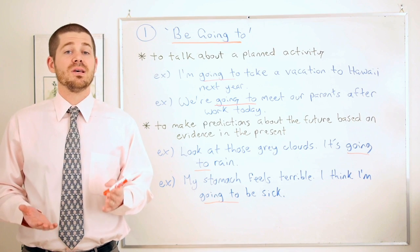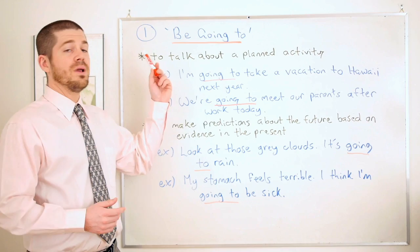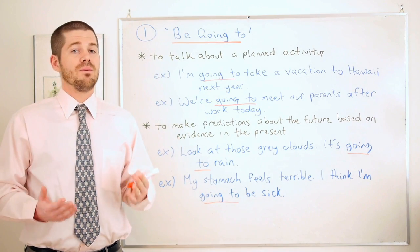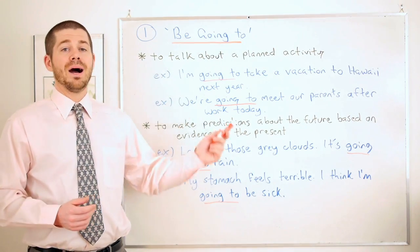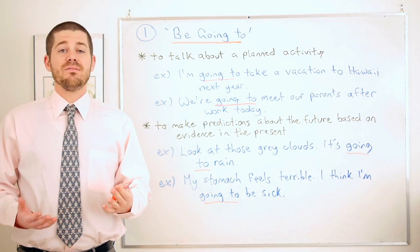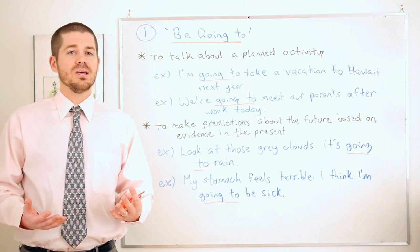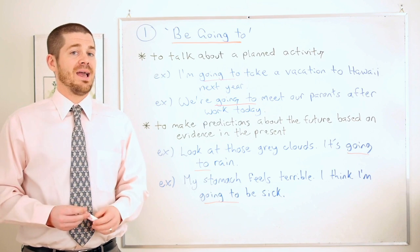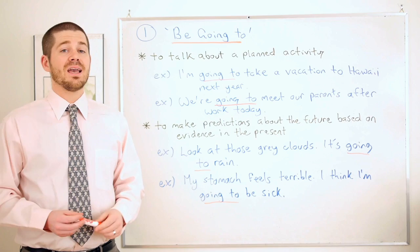I want to start with 'going to.' The first reason I put here is to talk about a planned activity — an activity that you've already arranged, where you've already made a decision, reservation, or some kind of plan. Let's look at our first example: 'I'm going to take a vacation to Hawaii next year.'